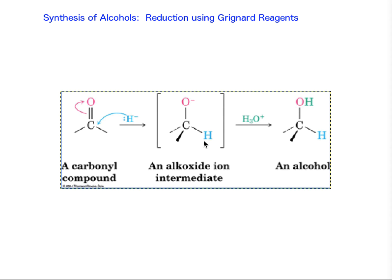Another set of reactions that result in the synthesis of alcohols are another type of reductions, however we're not using a hydride source in this case — we're going to use Grignard reagents. You've done this in laboratory actually. You took benzophenone, a carbonyl-containing compound, you reacted it with a Grignard reagent, magnesium-bromobenzene, and you resulted in triphenylmethanol. That was the whole point of the lab: to synthesize triphenylmethanol, and you confirmed it via IR.